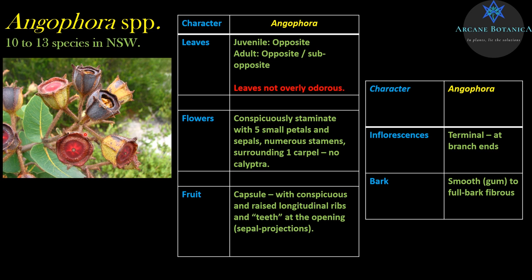Angophora is the best genus to start with because there are only 10 to 13 species. What I said about New South Wales can be extended to the whole eastern seaboard — Queensland, New South Wales, Victoria. They go a fair bit inland but not too far. The lumpers think some species are the same and can't really be differentiated morphologically even though they grow in different areas. On Euclid they only recognise 10 — so it's a good place to start compared to the 700 to 900 eucalypts overall.